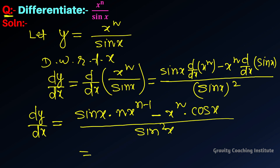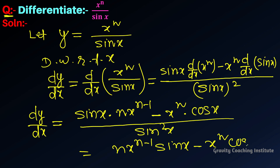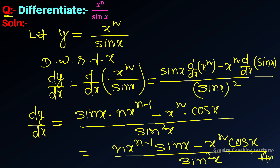So dy upon dx equals n x to the power n minus 1 into sin x, minus x to the power n into cos x, all upon sin square x. Which is the required answer.